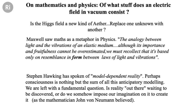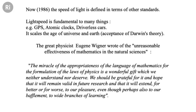He didn't understand what was the underlying reality. What is reality is a deep question in quantum mechanics. Stephen Hawking spoke of a model-dependent reality and the idea that consciousness is nothing but the sum of all this anticipatory modelling that our brain is doing all the time — leaving a fundamental question: is reality out there waiting to be discovered, or do we somehow impose our imagination on it to create it? That's what John von Neumann, one of the greatest mathematicians and physicists of the last century, believed. The speed of light, I'm afraid to say, is no longer measured. In 1986, it was defined in terms of other known constants, so there's no point in measuring it anymore — we've defined its value very precisely.